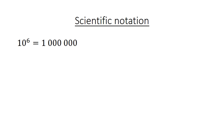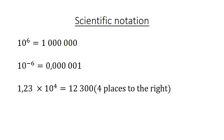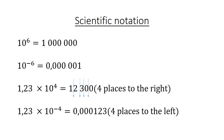Scientific notation: 10 to the power of 6 equals 1 million — a 1 and 6 zeros. 10 to the negative 6 equals 0.000001, also 6 places after the decimal. 1.23 times 10 to the power of 4 equals 12,300 — 4 places to the right. 1.23 times 10 to the negative 4 starts with 4 places to the left.